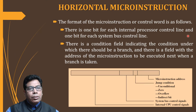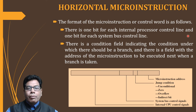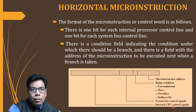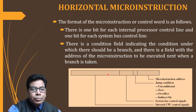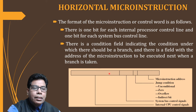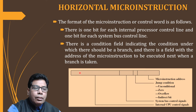Let us see the horizontal micro instruction format in detail. In this format of the micro instruction, also called the control word, there is one bit for each internal processor control line — the CPU control lines. This is quite wide because there can be around 100 control signals for the internal CPU. Since n signals need n bits, depending on the number of control signals, this width will be high.